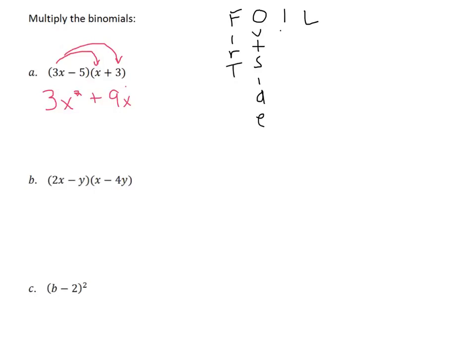Now the I stands for inside. So that means I'm going to multiply the inside terms. So negative 5 times positive x is going to give us a negative 5x.